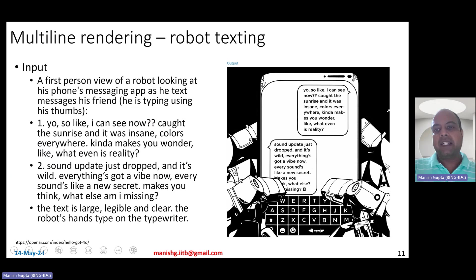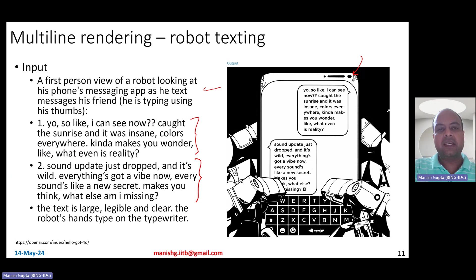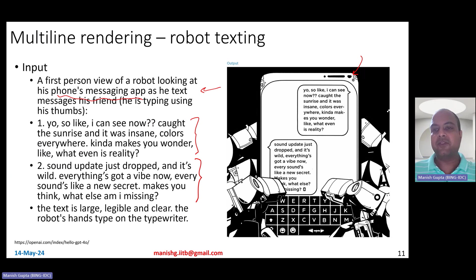You could also ask it to do multi-line rendering in a style you prefer. You could specify sentences to be rendered and tell it to show the text as if a person is typing on a messaging app where the first user says something, the second user says something, and so on.